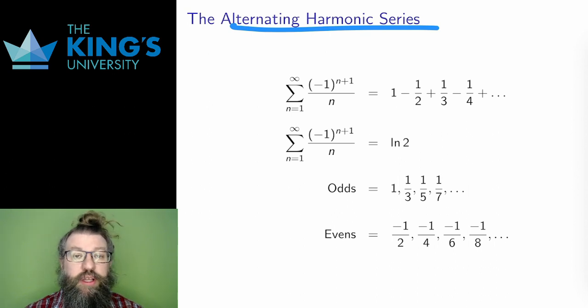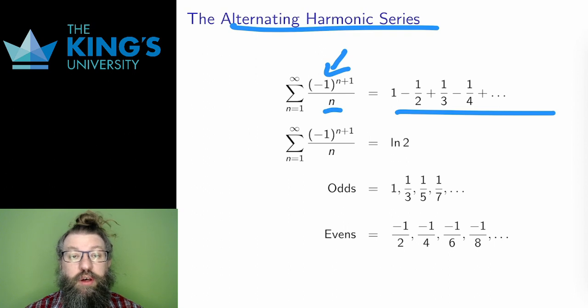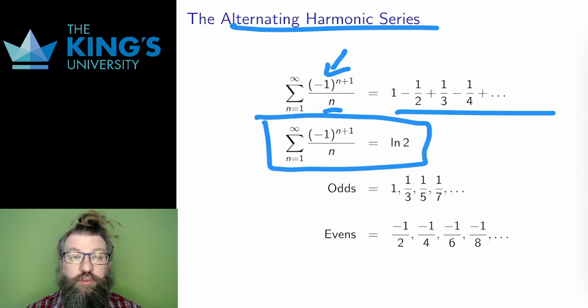Here is the alternating harmonic series, the reciprocals of the whole numbers with alternating signs. I'm not going to prove it here, but the sum of the alternating series is the natural logarithm of 2.